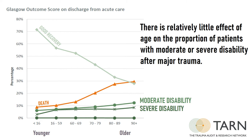There is relatively little effect of age on the proportion of patients with moderate or severe disability after major trauma, and a similar age effect is seen for interventions in the setting of aortic dissection, urgent thrombolysis, and carotid endarterectomy. Older people should thus be selected for surgical intervention when appropriate, based on their biological and not chronological age.